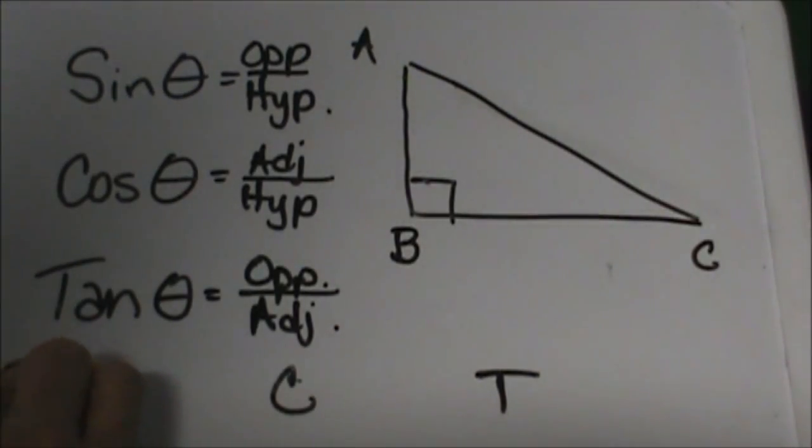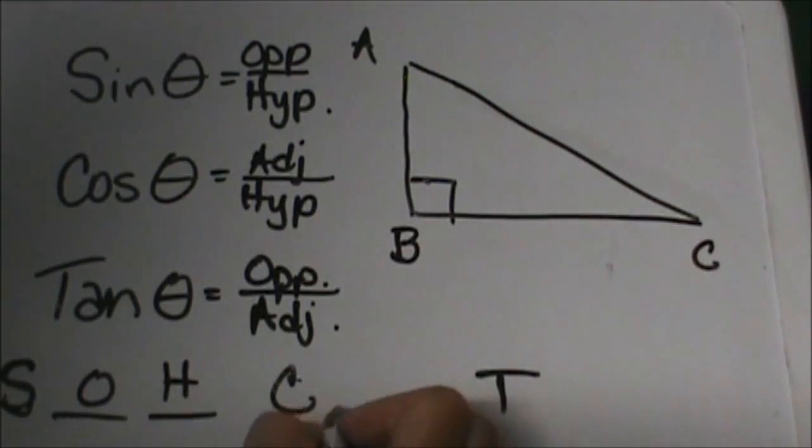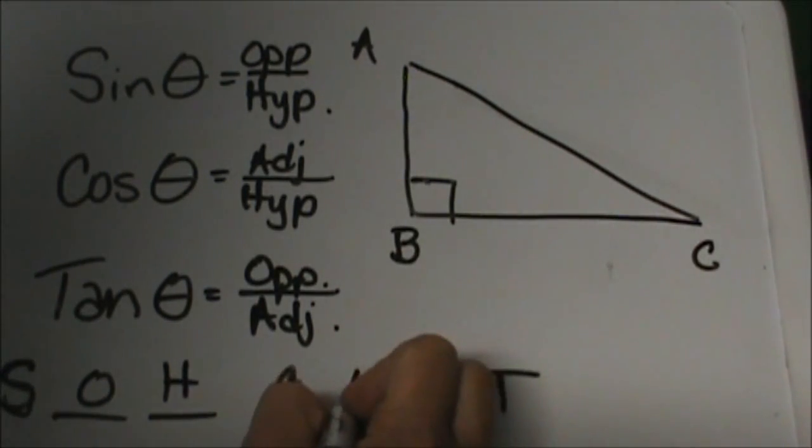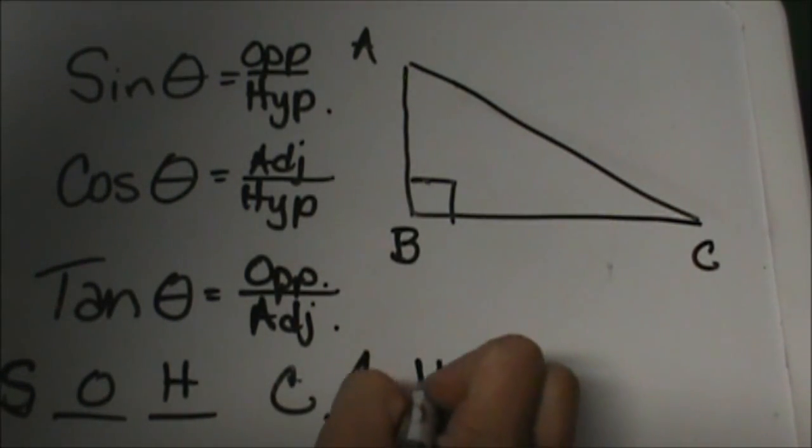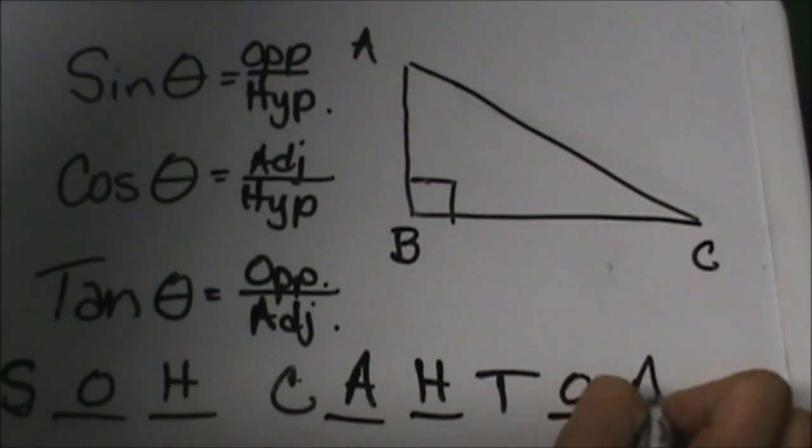Now some people teach it as SOHCAHTOA, so I'm going to show you where that comes from. SOH is sine which is opposite over hypotenuse, CAH is cosine which is adjacent over hypotenuse, and TOA is tangent which is opposite over adjacent.